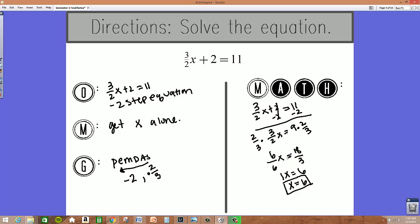Another way to think about this problem is we could turn it into a three-step equation. So at this step right here, when we are left with 3 halves x equals 9, instead of multiplying by the reciprocal, we could undo the division first by multiplying both sides by 2.